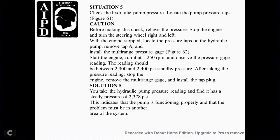Situation 5: Check the hydraulic pump pressure. Locate the pump pressure tap as shown in Figure 61. Caution: before checking the relief pressure, from the top of the engine, turn the steering wheel right to left until the engine stops. Locate the pressure tap on the hydraulic pump, remove the tap, and install a multi-range pressure gauge as shown in Figure 62. With the engine running at 1,250 RPM, observe the pressure gauge reading. The reading should be between 2,300 and 2,400 PSI standard. After taking the pressure reading, disengage and stop the engine, remove the multi-range gauge, and reinstall the tap plug. Solution 5: The hydraulic pump pressure reading shows a steady pressure of 2,378 PSI, indicating the pump is functioning properly. The problem must be in another area of the system.